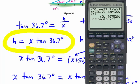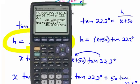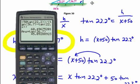Multiplying x ≈ 60.49 by the tangent of 36.7 degrees and hitting enter gives the height of the tree — approximately 45 feet tall.